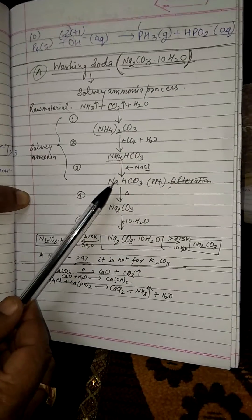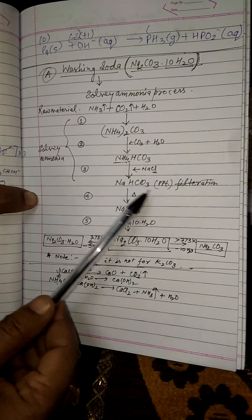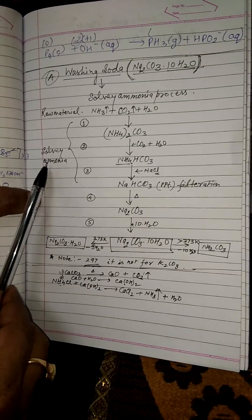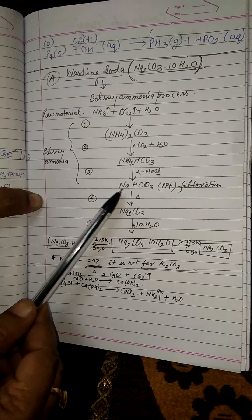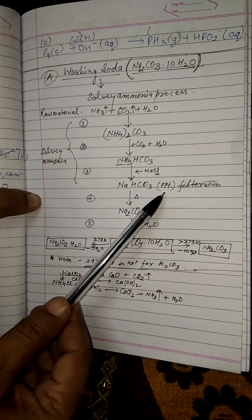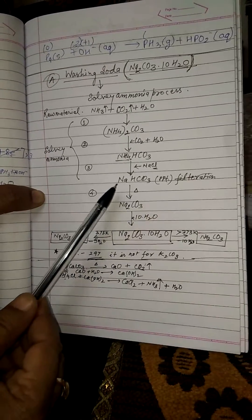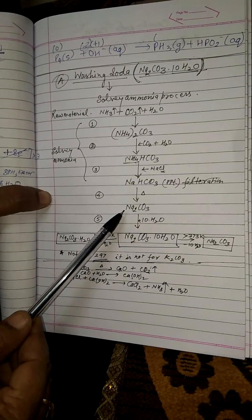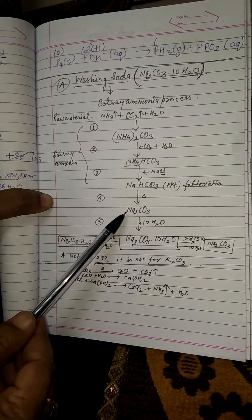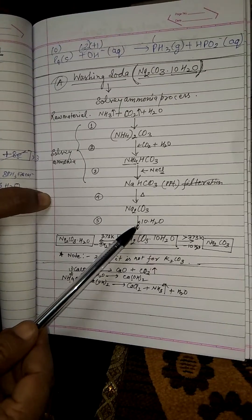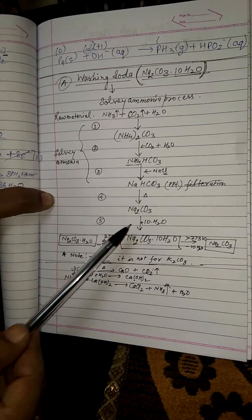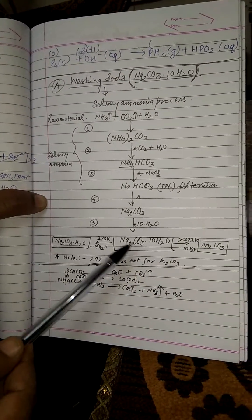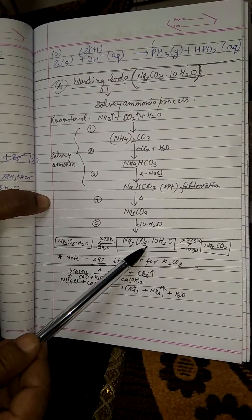It converts into sodium hydrogen carbonate, which forms a precipitate. In the Solvay ammonia process, we separate out sodium hydrogen carbonate as a precipitate. This precipitate on heating converts into sodium carbonate, and when treated with water, converts into sodium carbonate decahydrate (Na2CO3·10H2O), which is known as washing soda.